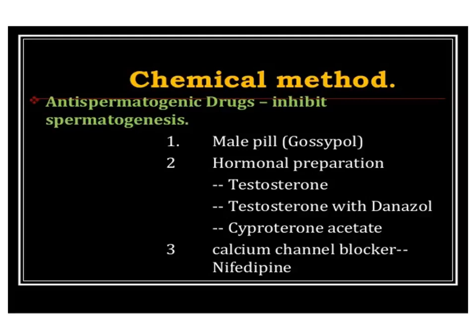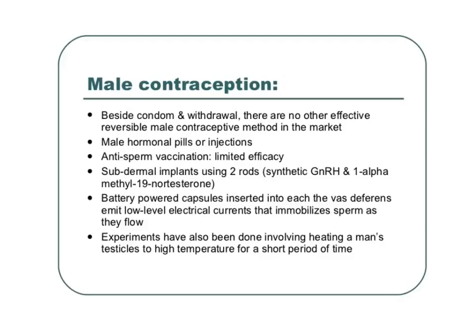Male contraceptives include gossypol, hormonal preparations like testosterone, danazol, cyproterone acetate, and calcium channel blockers — certain things which can decrease the effectivity of sperm. However, besides the condom, withdrawal, and maintaining the safe period through natural methods, there is hardly any spacing method available for males.